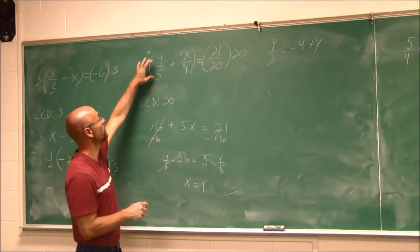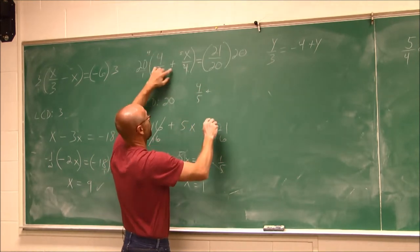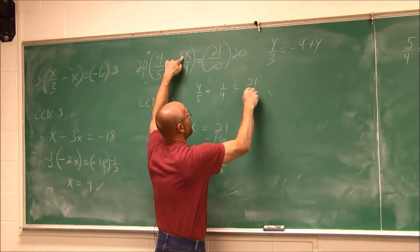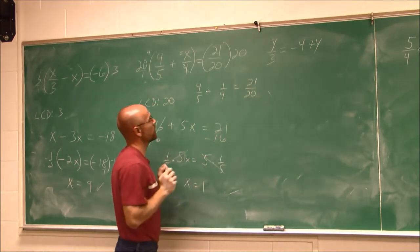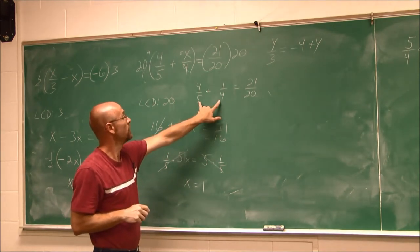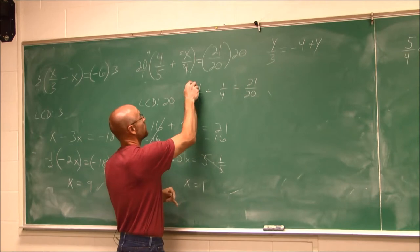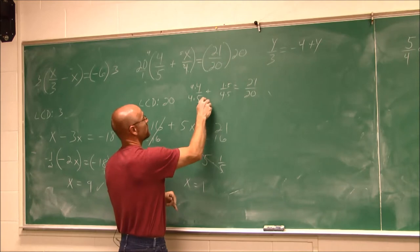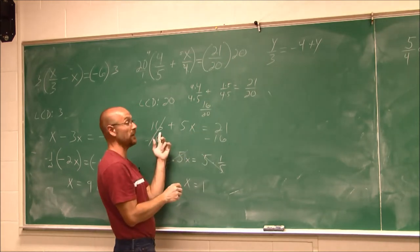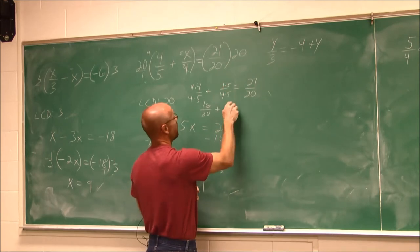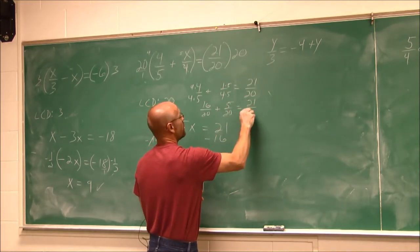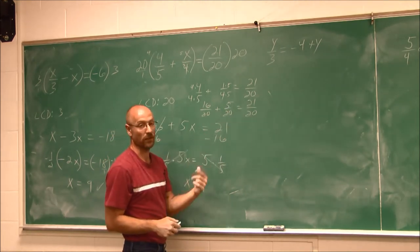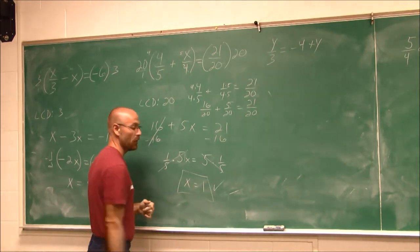Always check your work. We go back 4 fifths plus 1. That's my value of x. 4th equals 21 twentieth. Is that a true statement? We have to have a common denominator, which for 4 and 5 is 20. So I have to multiply this by 4 over 4. Multiply this by 5 over 5. This gives me 16 twentieths. That 16 came back. That's a good sign. And 5 twentieths. 16 and 5 is 21 over 20. 21 twentieths. True statement. I checked my answer. I know it works.